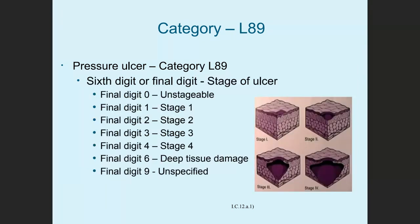The sixth digit — or sometimes the final digit — indicates the stage of the ulcer. Final digit zero is unstageable, digit one is stage one, digit two is stage two, digit three is stage three, digit four is stage four, digit six is deep tissue damage, and digit nine is unspecified.